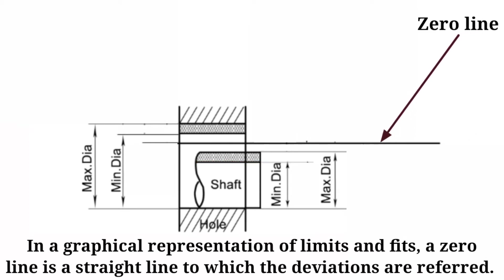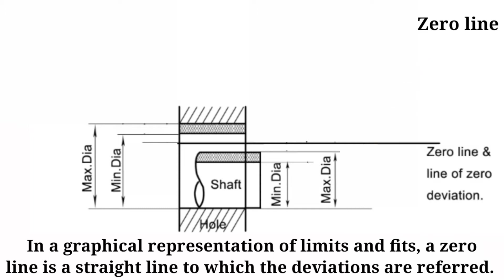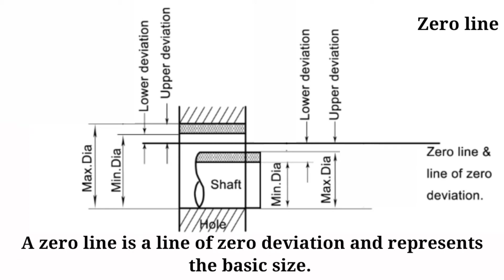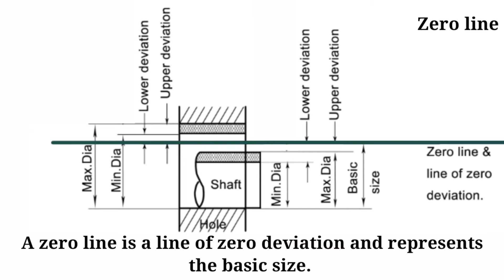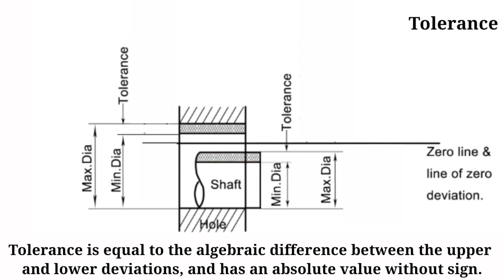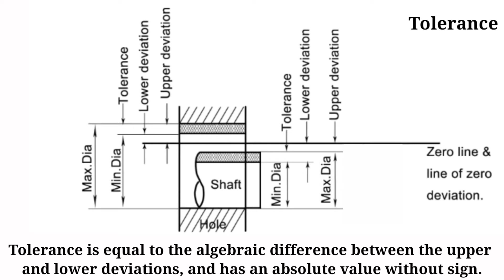Zero line. In a graphical representation of limits and fits, a zero line is a straight line to which deviations are referred. A zero line is a line of zero deviation and represents the basic size. Tolerance is the difference between the maximum limit of size and the minimum limit of size. A tolerance is equal to the algebraic difference between the upper and lower deviations and has an absolute value without sign.